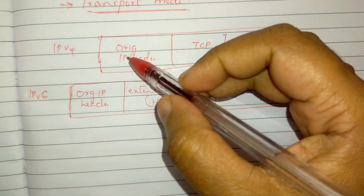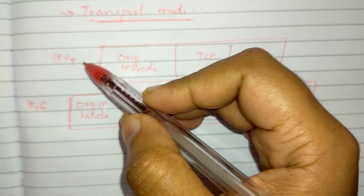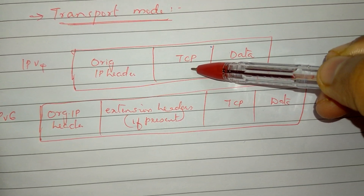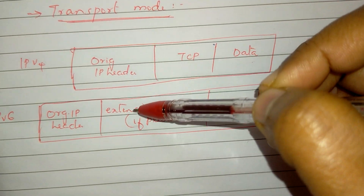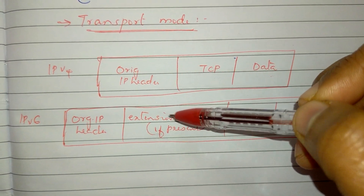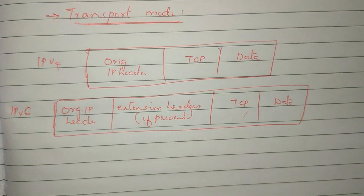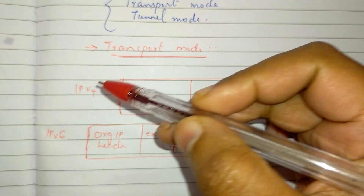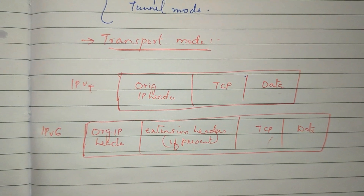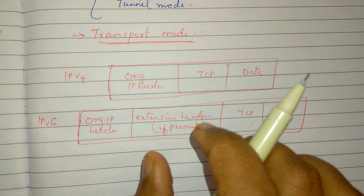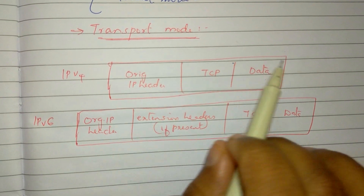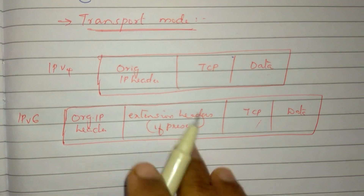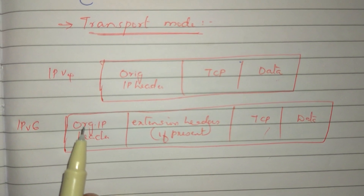This figure shows IPv4 (version 4) and IPv6 (version 6). IPv4 has the original header then TCP and data. IPv6 has extension headers, the original IP header, TCP and data. If we are using transport mode AH with IPv4 or IPv6, we now add the AH.